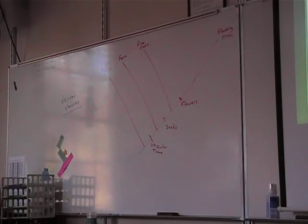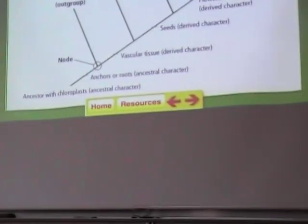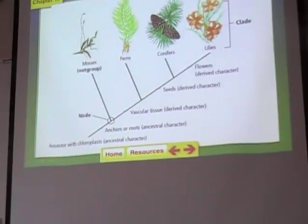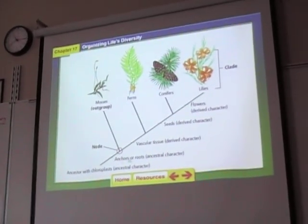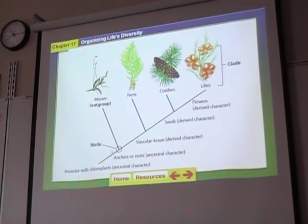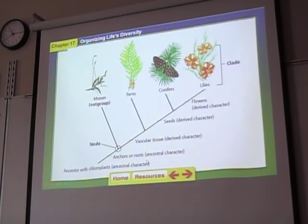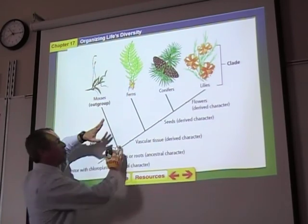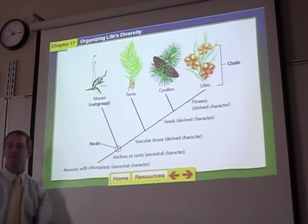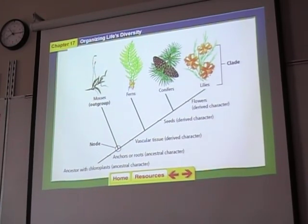This is actually on page 496 in your book: mosses, ferns, conifers — that's pine trees — and flowering plants. A node is an area of divergence from the rest of the group, where a branch comes off. So that's an evolutionary tree.